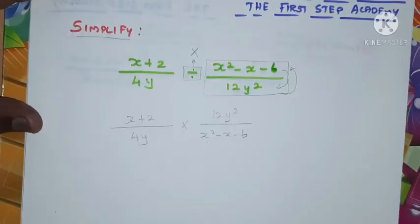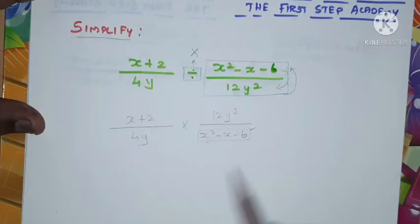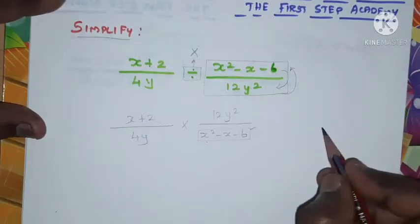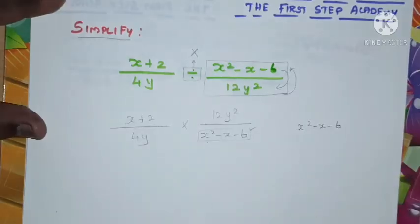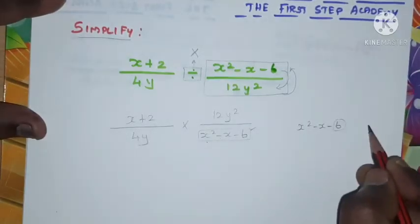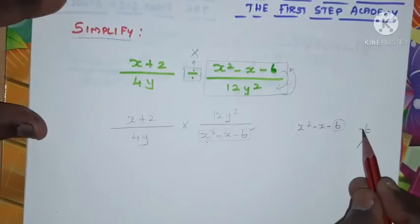Now look, we have only one polynomial in this, so we need to factor this. Hence, x²-x-6. Look at the constant -6.